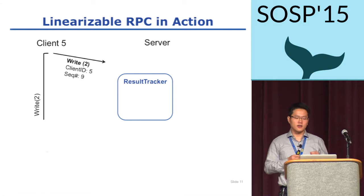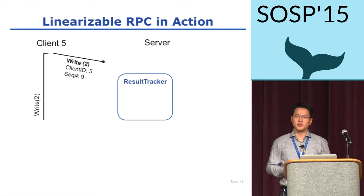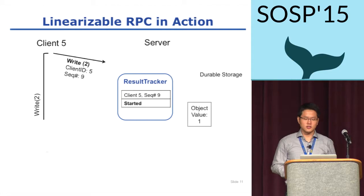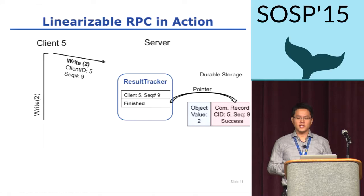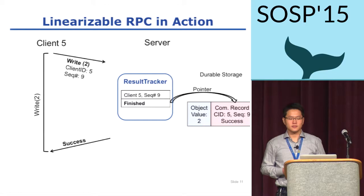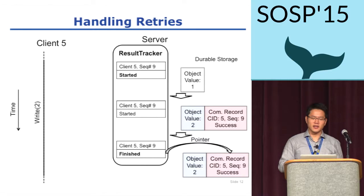Let's see an overall picture. A client is writing value 2 on an object. On the server side, a Riffle component called resultTracker tracks all completion records. As a new write arrives, the server updates the resultTracker to denote the execution has started. After marking this start, the server can update the object value to 2 and create a completion record atomically. As a last step, resultTracker updates the RPC status to finished, and then the server responds back to the client with success. This diagram shows all steps by timeline.